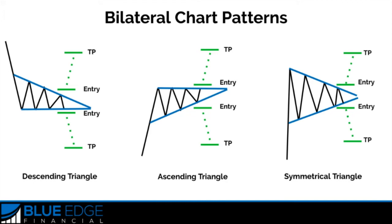Finally, we have the bilateral chart patterns. Bilateral chart patterns are a little trickier since they can really move in either direction — the triangle formations are all part of this category. To make sure we're prepared for price to either move up or down, we'll place an order on top of the formation and another order on the bottom of the formation. Once one gets triggered, we can cancel the other, so no matter which way it breaks, we're going to be in a trade.